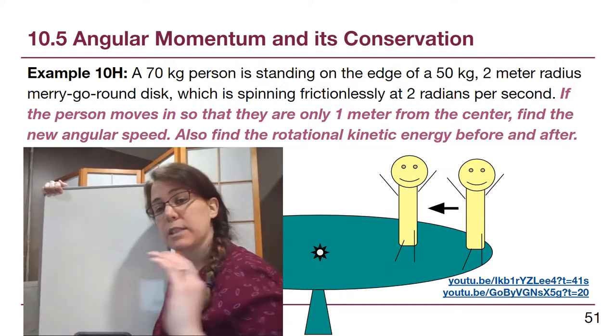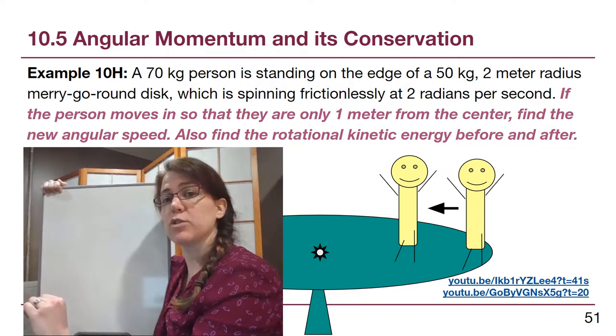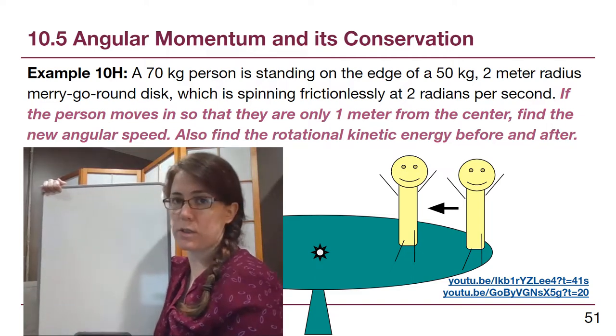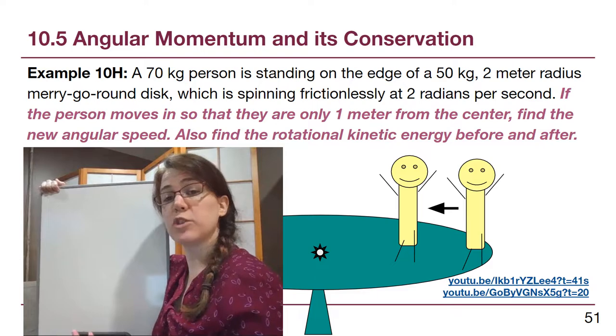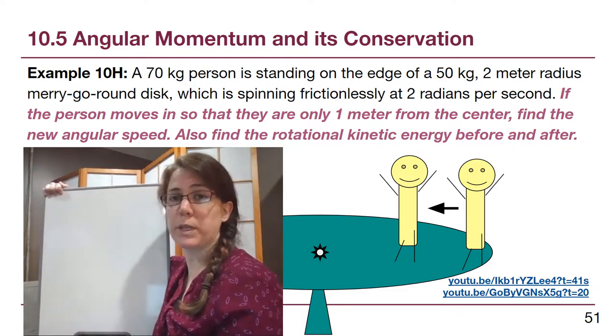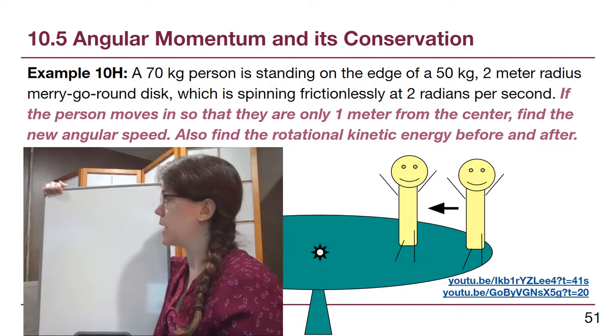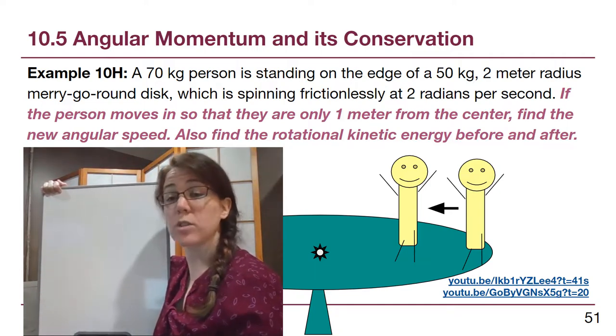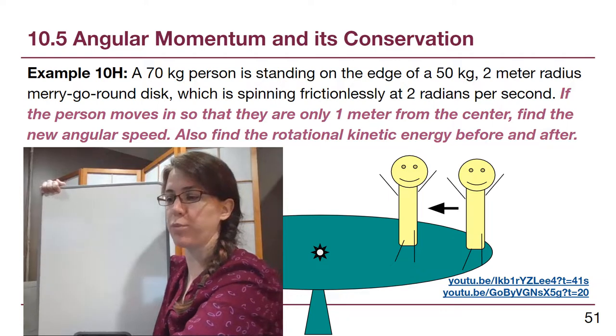No one is actively pushing on the edge of this. There's no external torque to the system. And so with a situation where there is no net external torque, angular momentum is going to be conserved. We talked about that in the lecture video. So let's see how that works in a real problem.